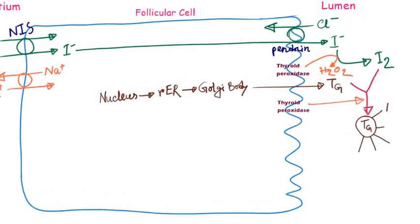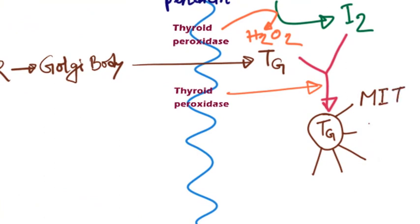The fifth step is storage of the thyroglobulin. After synthesis of the thyroid hormones, each thyroglobulin molecule contains up to 30 T4 molecules and a few T3 molecules. Thyroid hormones are stored in the form of thyroglobulin in the colloid of the follicles. This storage can supply the body for 2-3 months with its normal requirements. Therefore, when synthesis of thyroid hormone ceases, the physiological effects of deficiency are not observed for several months.